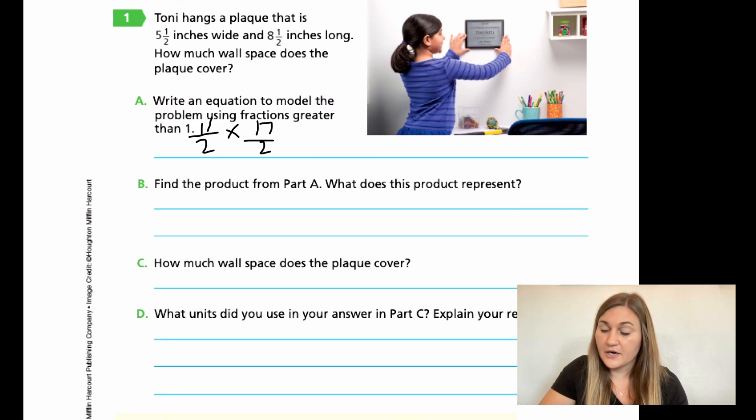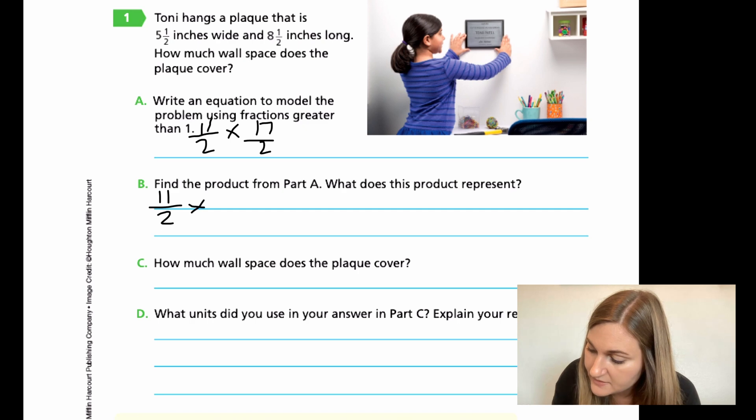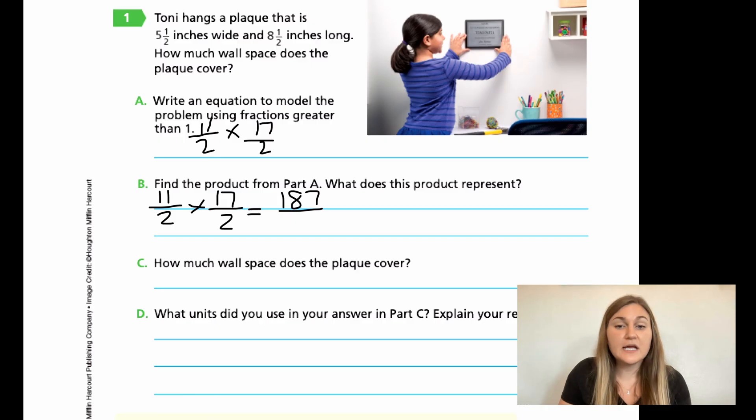For B, it says find the product from part A. So we are going to be solving, and then it says, what does this product represent? So first, let's go ahead and solve. So if I have 11 over 2, and I multiply by 17 over 2, I need to multiply 11 times 17. So 11 times 17 is going to be 187, and then 2 times 2 is going to be equal to 4. So 187 over 4, this is just showing the area of the plaque.